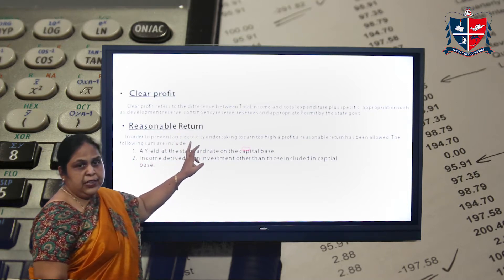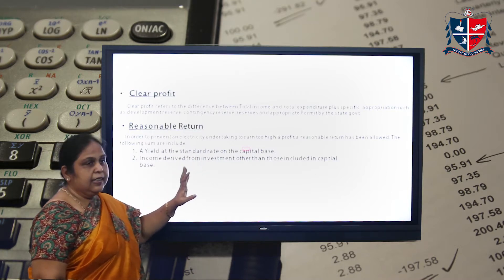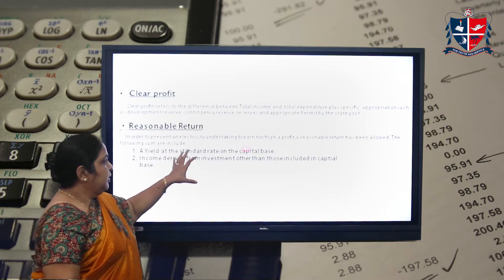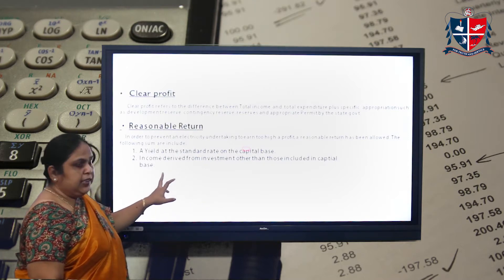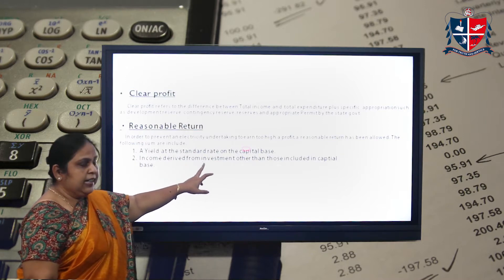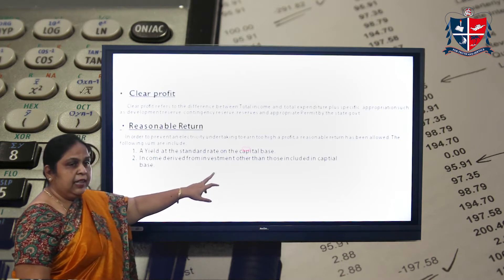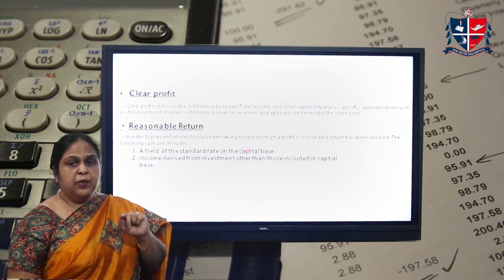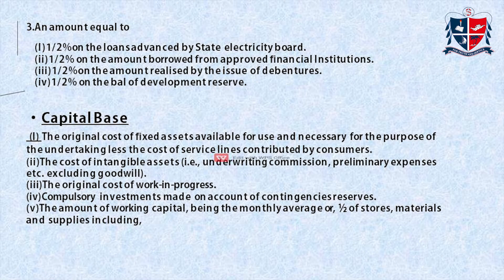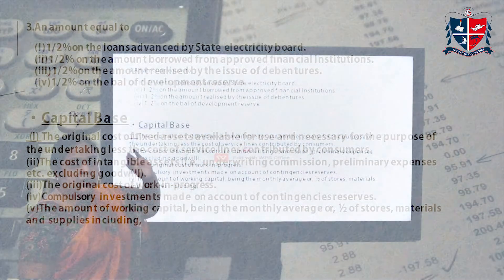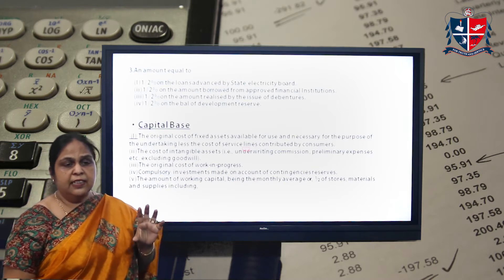The next term is reasonable return. Being a public utility company, you cannot earn too much profit, so you have to have a reasonable return. Reasonable return is based on: the yield at the standard rate on the capital base; income derived from investments other than those included in the capital base; half percent of loans advanced by the state electricity board; half percent of amounts borrowed from approved financial institutions; half percent of the amount realized by issue of debentures; and half percent of the balance of development reserve.